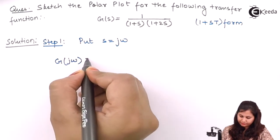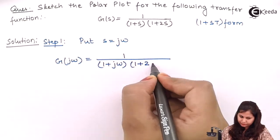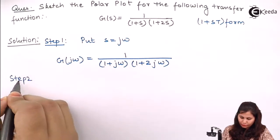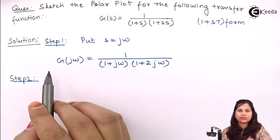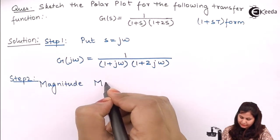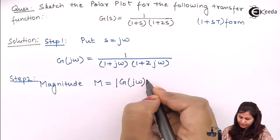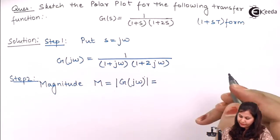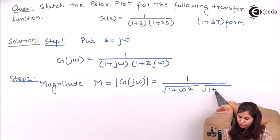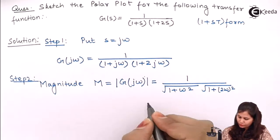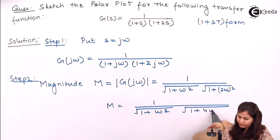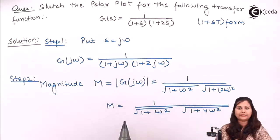We have just replaced s by jω. The second step is to find out the magnitude and the phase angle of G(jω). The magnitude M is calculated as 1 divided by √(1 + ω²) times √(1 + 4ω²). This is the magnitude of G(jω).